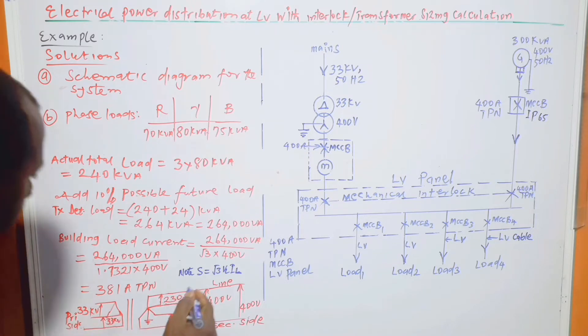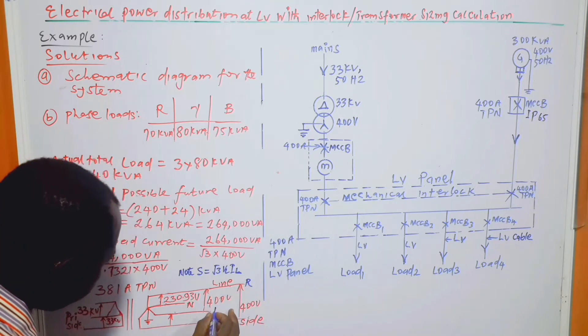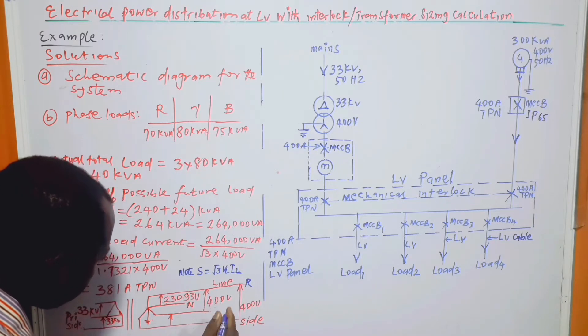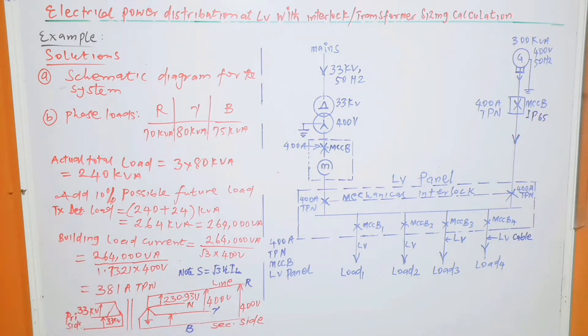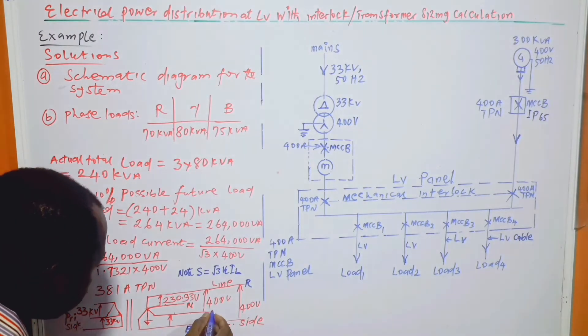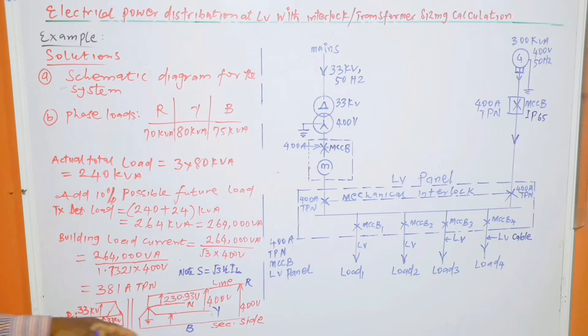The current flow in this phase is also 381, and also in this phase is also 381. We can call this one the red phase, and this one will be yellow phase, and this will be blue phase. On the secondary side, and this is the primary side, we have 33 kV line to line. And that is the answer to the B part of the question.